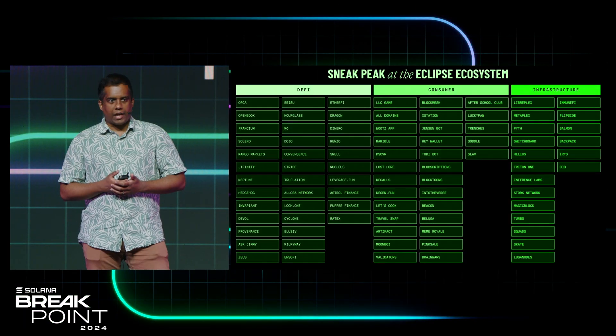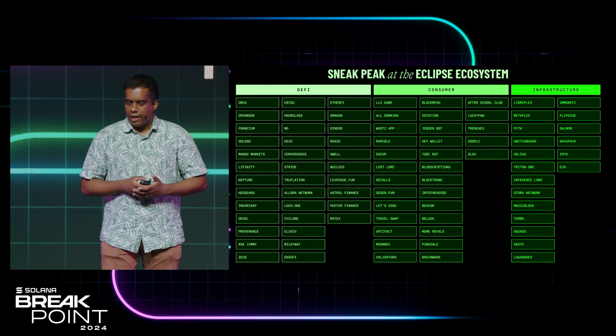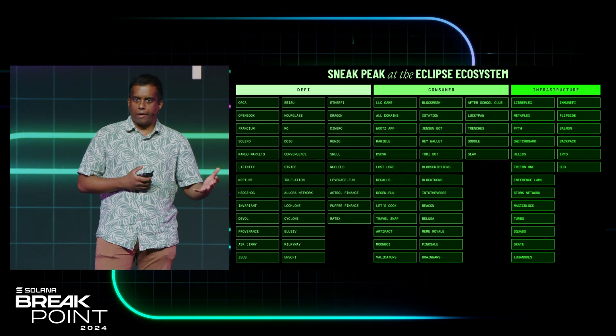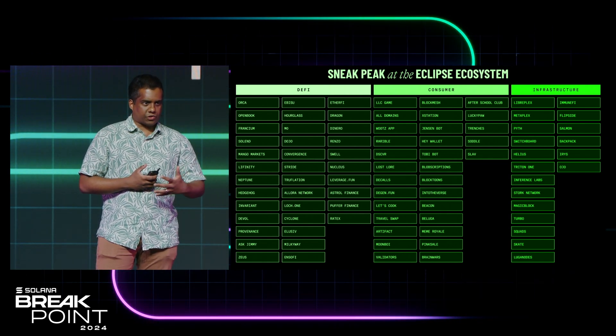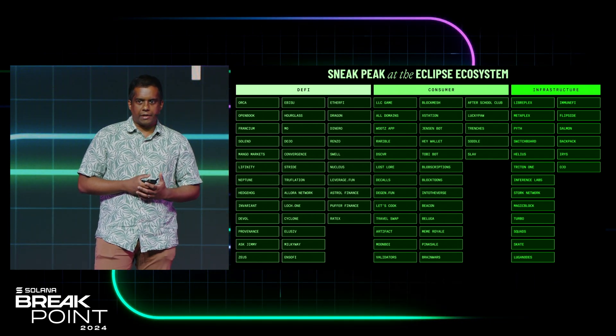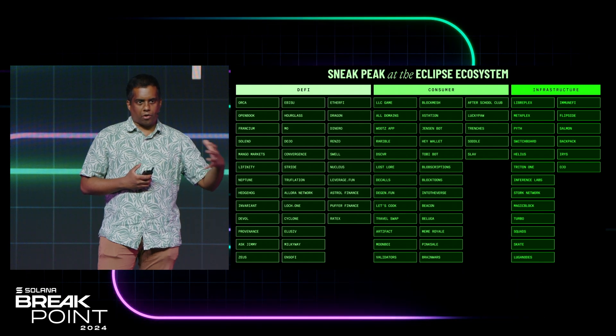We're also working with a handful of DeFi projects to expand into the Ethereum user base. On the DeFi side, we're excited to bring on Orca, a leading AMM on Solana L1; Solend, which has rebranded as SAVE, a leading lending protocol; as well as Mango, which is doing a relaunch in partnership with Manifest — a rebuild of OpenBook. We're excited for users to be able to access these apps in the coming weeks as we head to public mainnet.